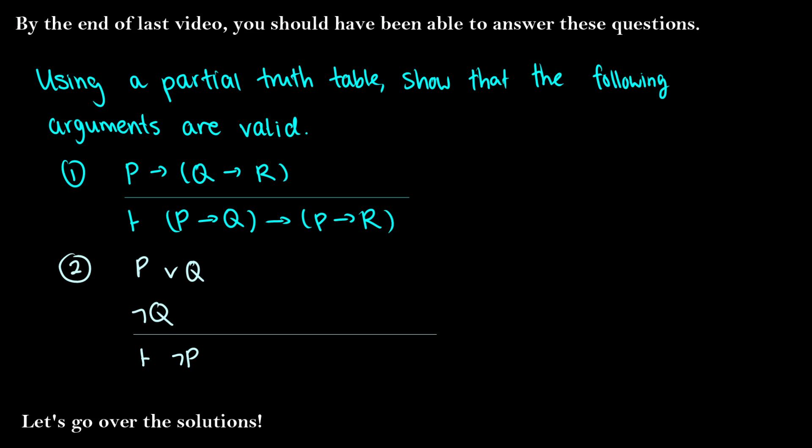In this video we're going to talk about the solutions to the partial truth tables showing that these arguments are valid. As always, if you have the means to financially support the channel and you enjoy the videos, you can join as a member for two or five dollars Canadian a month.